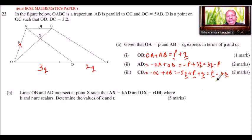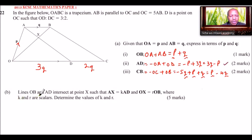Make sure that when you're answering this kind of question, this part is very important. Because if you don't get the correct expressions here, you are not likely to work out part B properly. Part B of this question: we are told lines OB and AD intersect at X. This is our OB and this is our AD; they intersect at X. Such that AX equals KAD and OX equals ROB, where K and R are constants. Determine the values of K and R. Let's first put the necessary information.